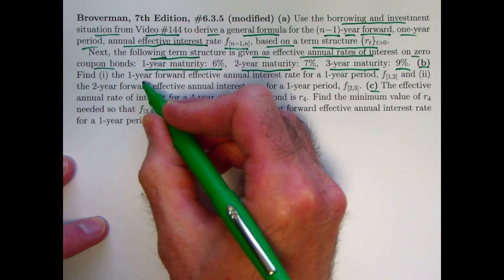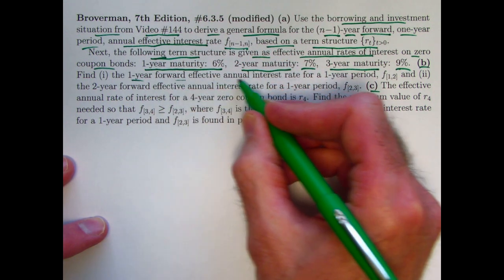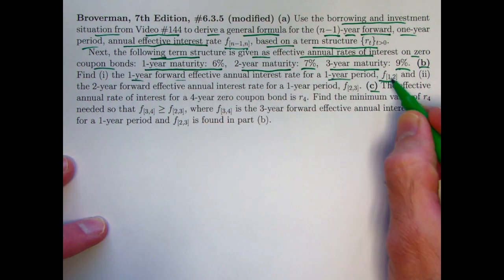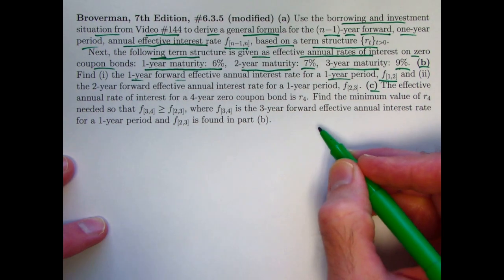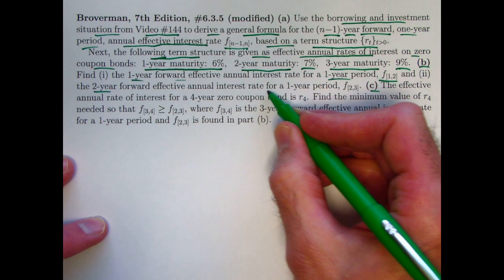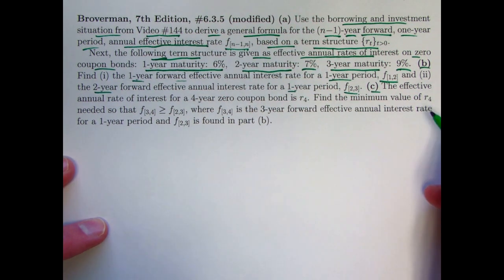In part B, first we'll find a one-year forward effective annual interest rate for a one-year period, denoted by F sub 1 to the interval from 1 to 2. Then a two-year forward effective annual interest rate for a one-year period, F sub 2 to 3.